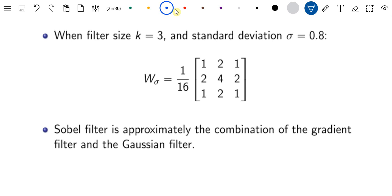The question here is how do I get this approximation. First, there's a typo - k here should be 1. The filter size is 3, so it's not k equal to 3, k is 1.